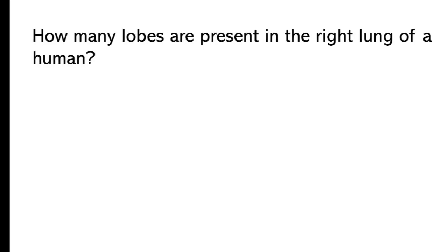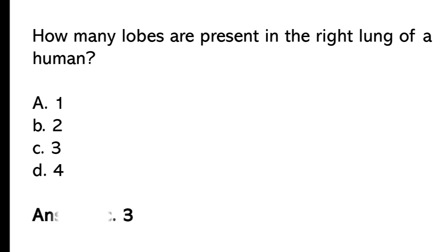How many lobes are present in the right lung of a human? One, two, three, four. So the correct answer is option C. Three lobes are present in the right lung of a human.